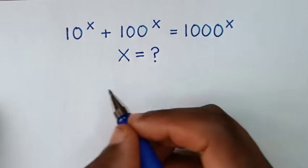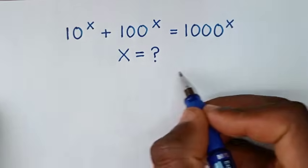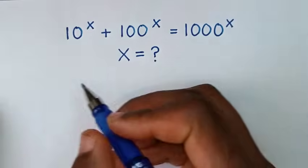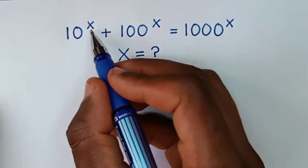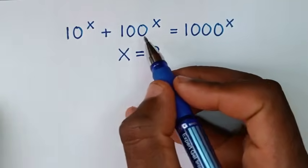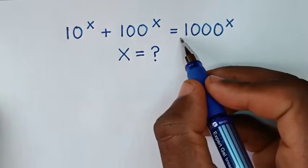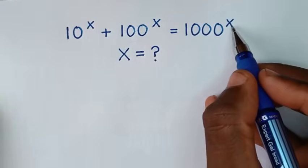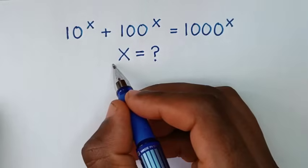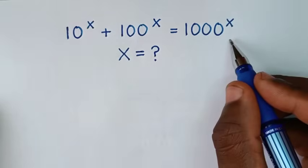Hello, you are welcome to solve this math problem which is 10 power of x plus 100 power of x is equal to 1000 power of x. We need to find the value of x from this equation.